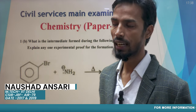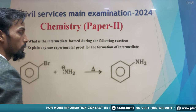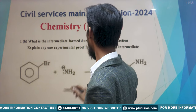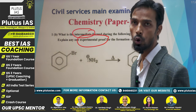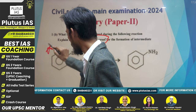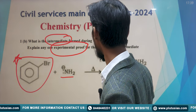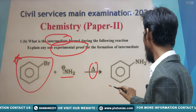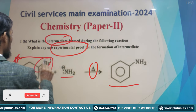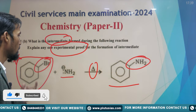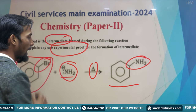Hello everyone, welcome back to Protoss IS. We are discussing the Chemistry Optional Question Paper 2024. The question asks us to identify the intermediate and its experimental proof in the reaction where Bromobenzene reacts with NH2⁻ under heat to give aniline. It is visible from the reaction that this is a nucleophilic substitution reaction — substitution of Bromine by NH2 in the presence of the nucleophile NH2⁻.